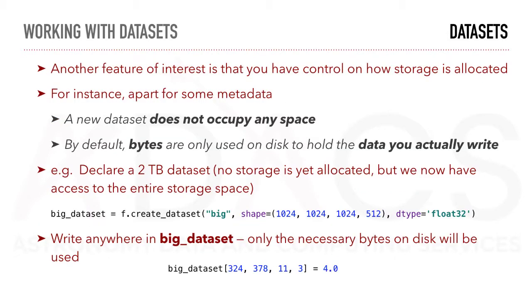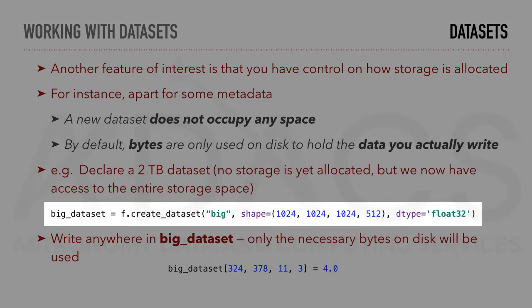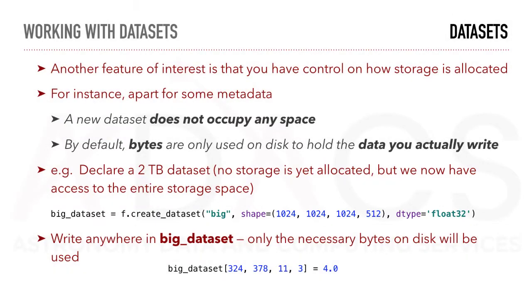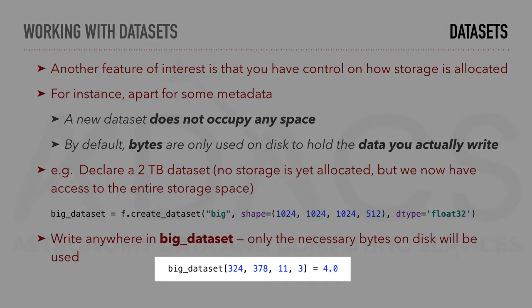Another feature of interest is that you have control over how storage is allocated. Apart from some metadata, a new dataset does not occupy any space by default — bytes are only used on disk to hold the data you actually write. For example, if you declare a 2TB dataset, no storage will be allocated, but you have access to the entire storage space. You can write anywhere in that declared dataset, and only the necessary bytes on disk will be used.